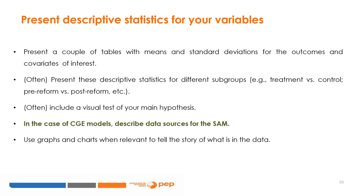Descriptive statistics are an interesting way to test your data's ability to corroborate the story you are telling. It is often handy to organize your descriptive statistics into a visual test of your hypothesis. You may start by presenting a couple of tables with means and standard deviations from your variables of interest — including all outcome variables, regressors of interest, and controls. To get your data to reveal your story, it might be helpful to present these descriptive statistics for different subgroups — for example, treatment versus control, pre-reform versus post-reform. Another way to organize your descriptive statistics into a visual test is to use graphs or charts.